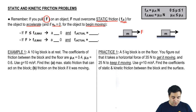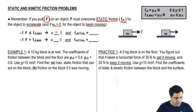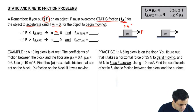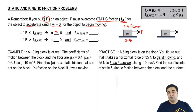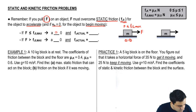If your force is not greater than the threshold, Fs max, your acceleration will be zero. So if your force is less than or equal to Fs max, what's going to happen is your acceleration is zero. Acceleration equals zero means equilibrium — it means forces are cancelling.